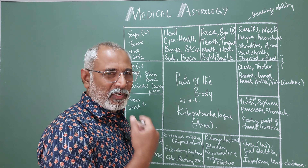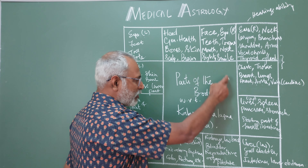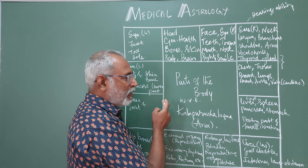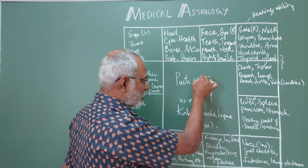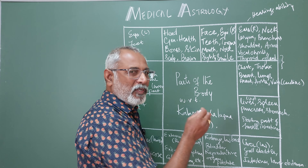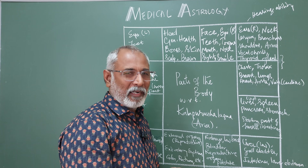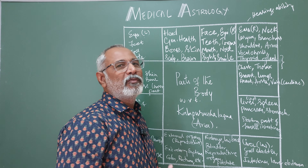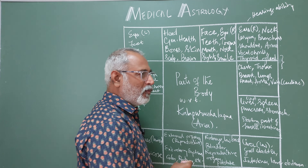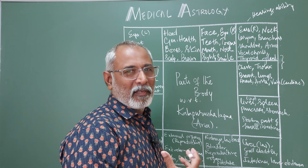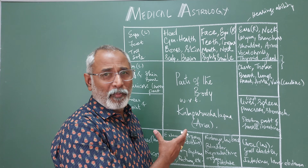In the South Indian chart, it is always cyclic in order. In the North Indian chart, it goes 1, 2, 3, 4 — anti-clockwise. The North Indian chart is more practically correct, but we have got used to this. People who are in the North, please excuse, but please learn. The concept is more important.